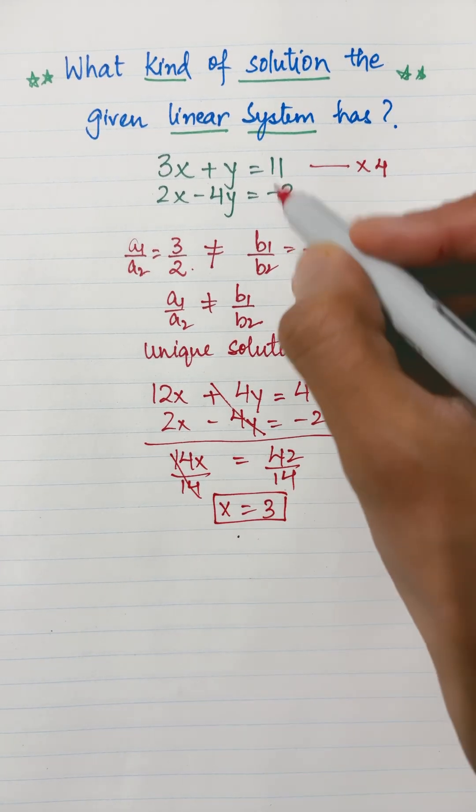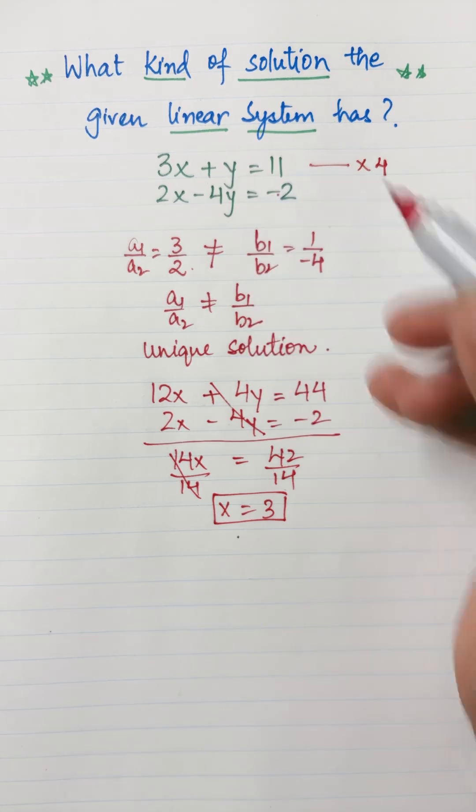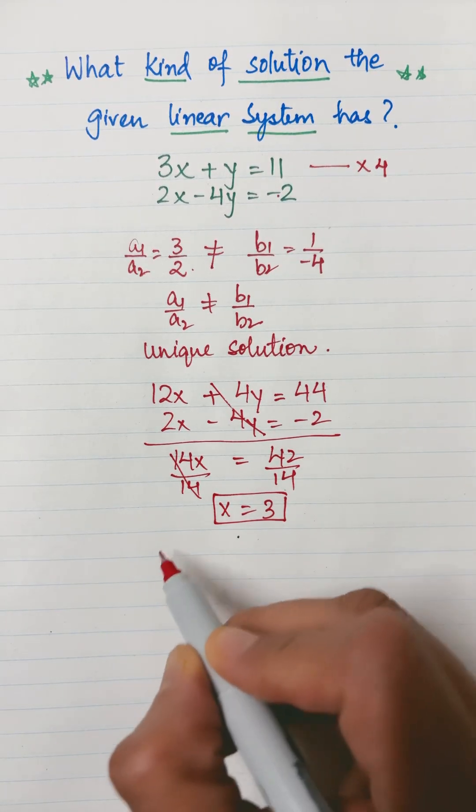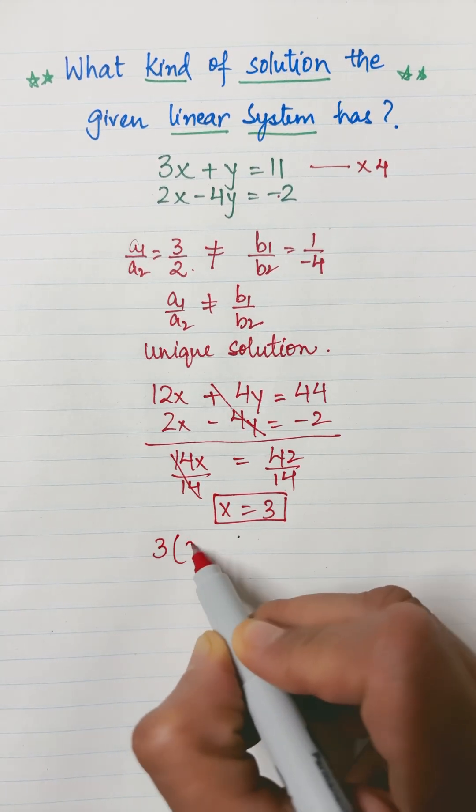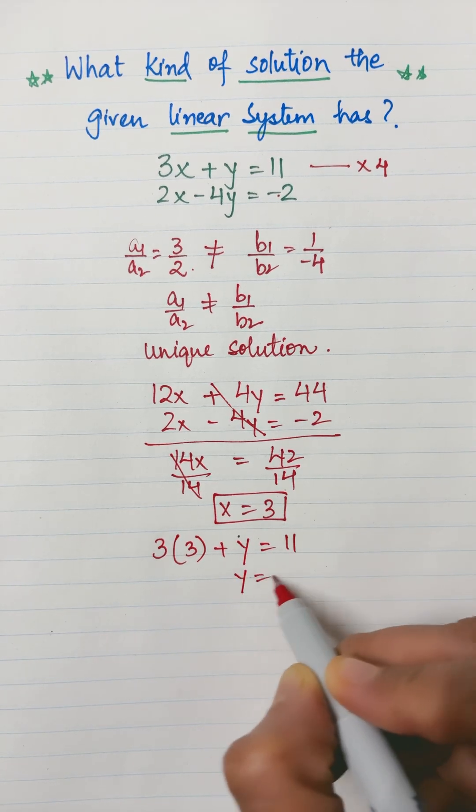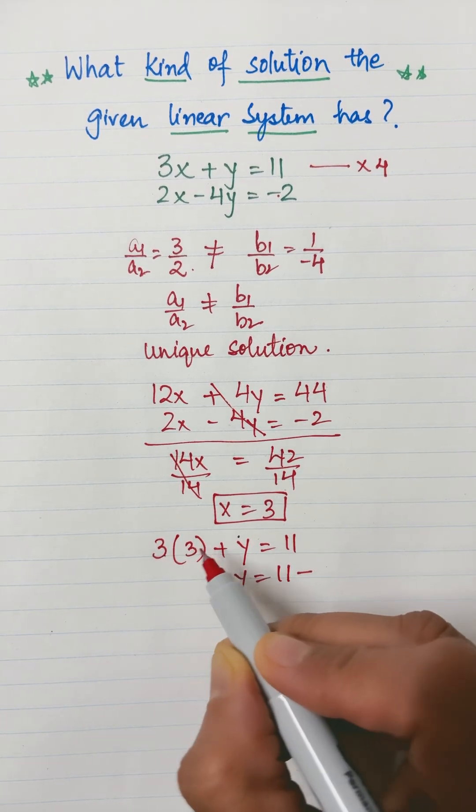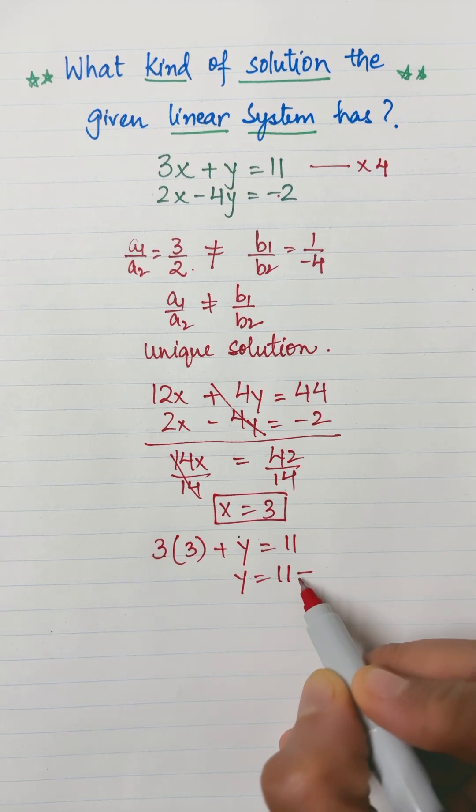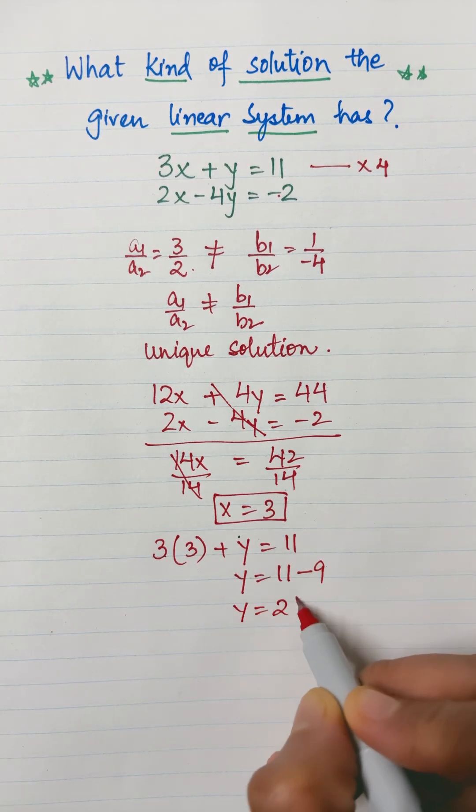Put this x equals 3 in either of these equations to get the value of y. I'll put it in the first equation. So 3x means 3 times 3 plus y equals 11. So y equals 11 minus 3 times 3. 9 shifted on that side becomes minus 9. 11 minus 9 is 2.